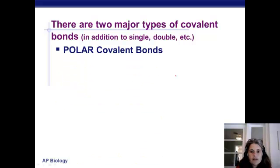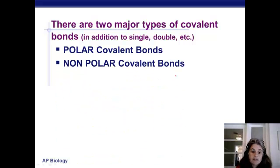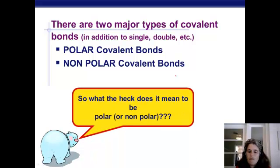There are two major types of covalent bonds, polar and nonpolar. And what the heck does it mean to be polar or nonpolar? And that's where the next half of this little intro to biochemistry is going to go, and we're going to talk about water quite a bit. That's it for right now. I will see you in the next podcast.